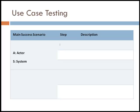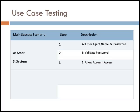Consider the first step of an end-to-end scenario for the login functionality of a flight reservation application, where the actor enters the agent name and password. In the next step, the system will validate the password. Next, if the password is correct, access is granted.